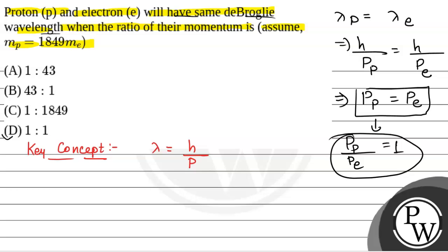So the ratio of their momentum will be 1 is to 1, which is option D. So this will be the final answer. The correct option will be option D.